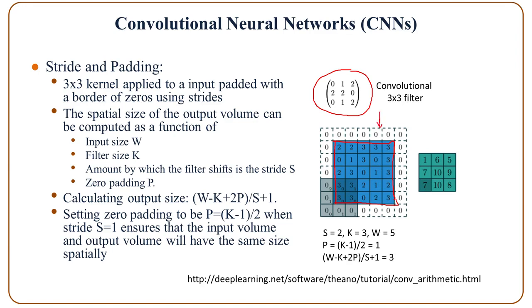What we do here is pad the input image with zeros. This gives us the output image, or the output map. The input image size is 5 by 5 by 3.